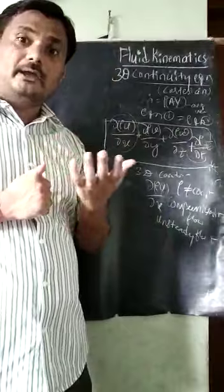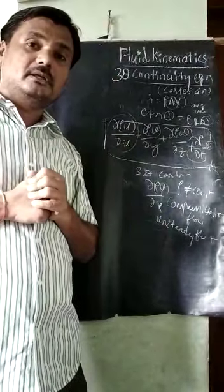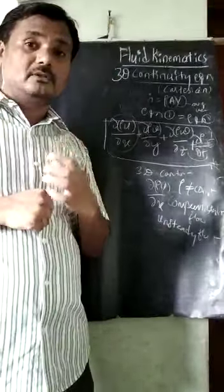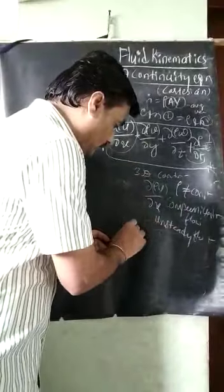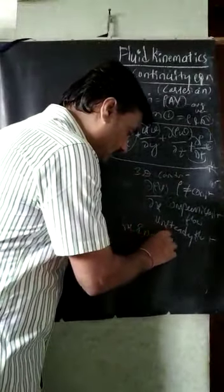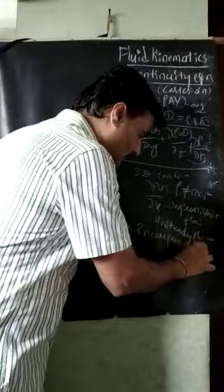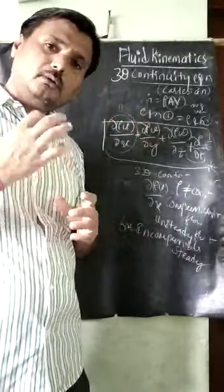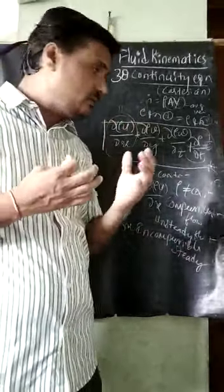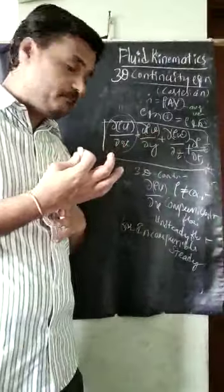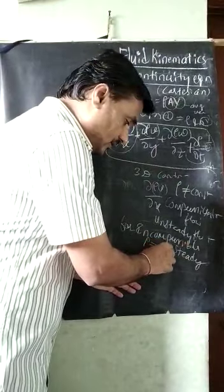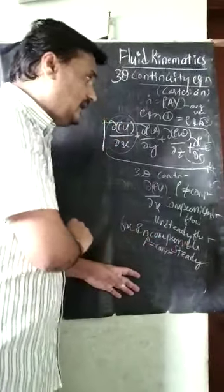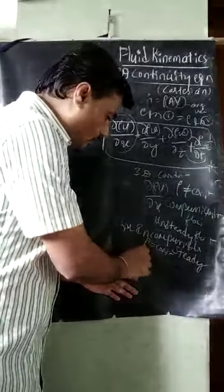In case of a derivation, if they ask to find the equation for incompressible steady flow, how does this equation change its form? Incompressible fluid flow means density is constant. So if density is constant, then d(ρ) = 0.